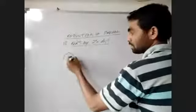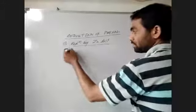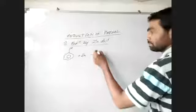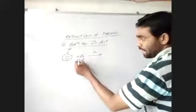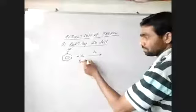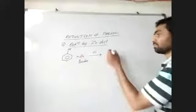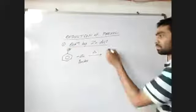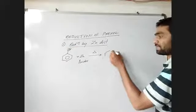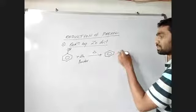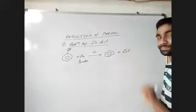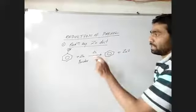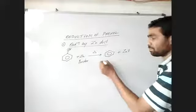When phenol is heated with zinc powder — the triangle means heating — zinc takes out the oxygen and we get benzene and zinc oxide. This is called reduction by zinc dust and there is a formation of benzene.